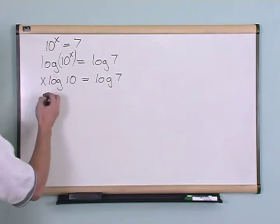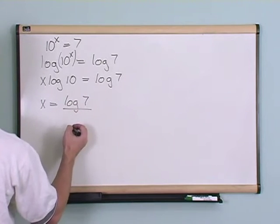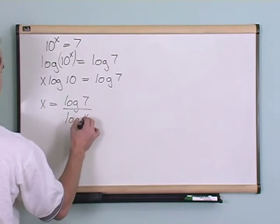So now it's simple. You can just solve for x and that's going to be equal to log of 7 over log of 10.